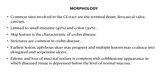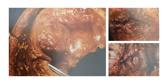Skip lesions are the characteristic feature of Crohn's disease and are not found in ulcerative colitis. Strictures are common. Earliest lesions are aphthous ulcers that may progress and coalesce into elongated serpentine ulcers. Edema and loss of normal mucosal texture are common. Sparing of interspersed mucosa results in a coarsely textured cobblestone appearance, where diseased tissue is depressed below the level of normal mucosa.